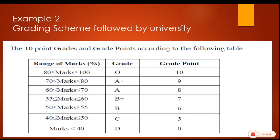The university has gone in for creating the grades and they call it a 10-point grade system, but it does not involve all 10 points. Basically, what they have done is put 0 at D, 5 at C, 6 at B, 7 at B plus, 8 at A, 9 at A plus, and 10 at O. They are given different intervals: 80 to 100, 70 to 80, 60 to 70, 55 to 60, and so on.